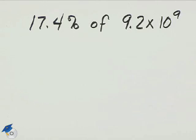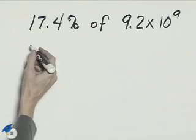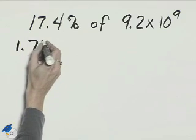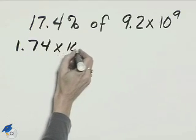The 65 and older population is 17.4 percent. Change 17.4 percent to scientific notation: 1.74 times 10 to the negative 1.